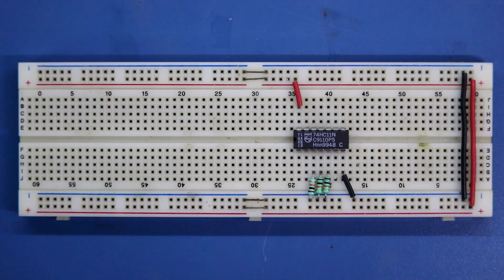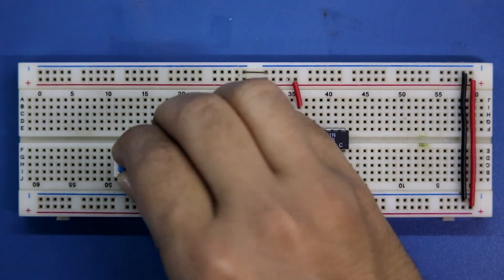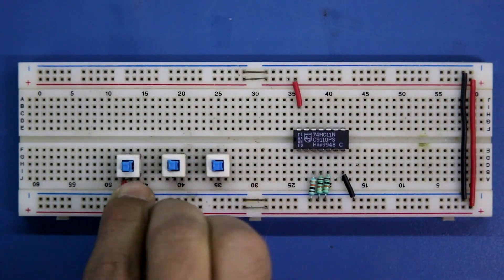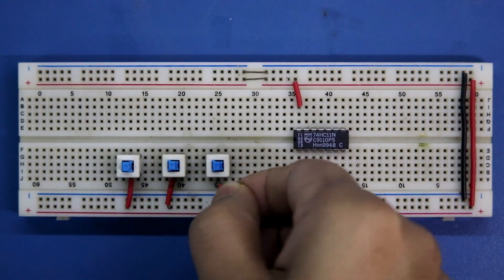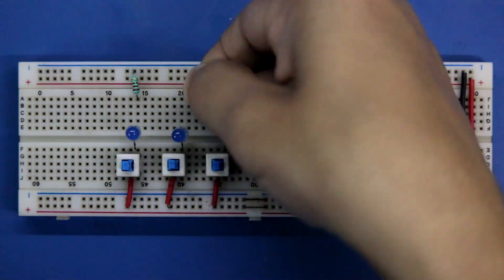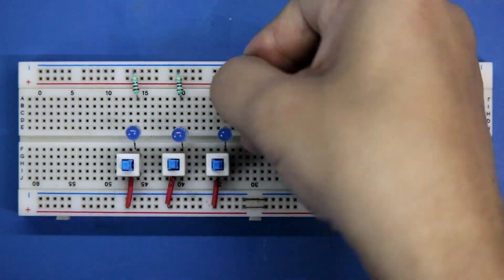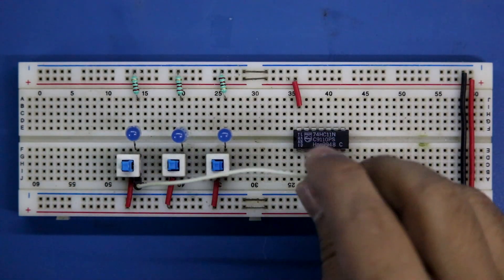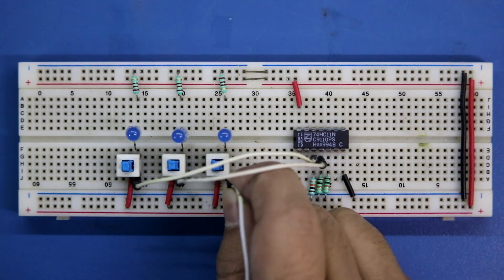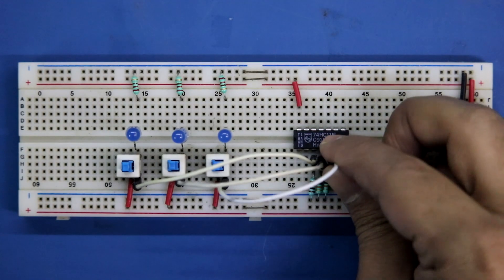Putting the input switches. This is switch A, switch B, and switch C. One pin of the switch is connected to the positive rail. Connecting the LEDs, connecting the 220 ohm resistors. Input A is connected to pin number 3, input B is connected to pin number 4, and input C is connected to pin number 5.